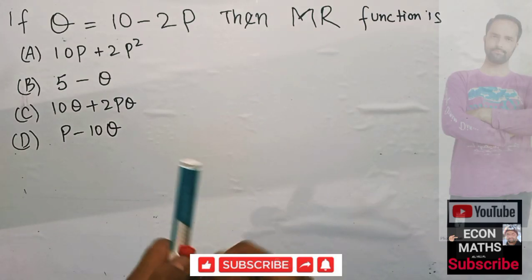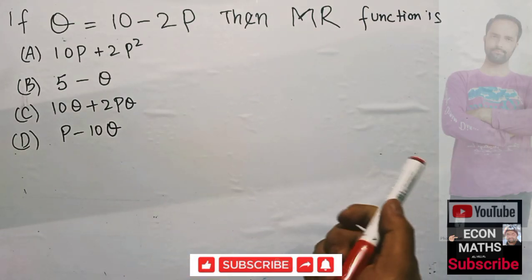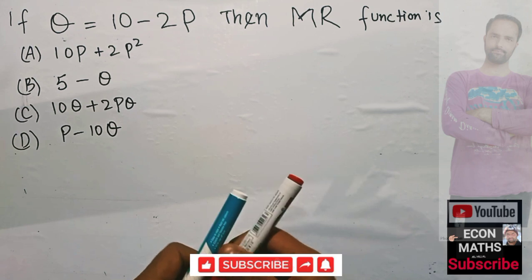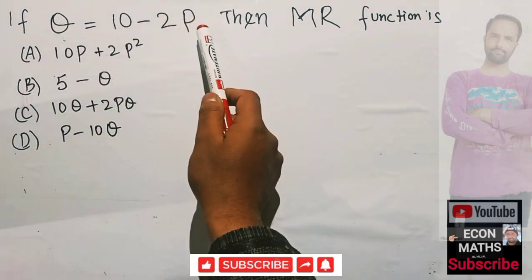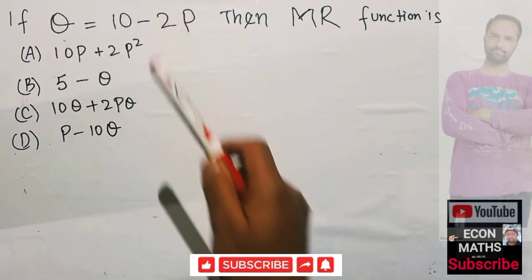Let us solve a question on how to find the marginal revenue function from the given demand function. The question is: if Q equals 10 minus 2P, where Q is the quantity demanded and P is the price.